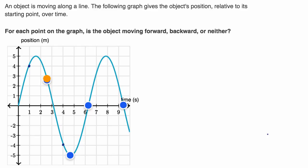So at this point right over here, at that moment, we're about two and a half meters in front of our starting point. We're at a positive position of two and a half meters. But as time goes on, we are moving backwards, closer and closer to the starting point. So we are moving backward.